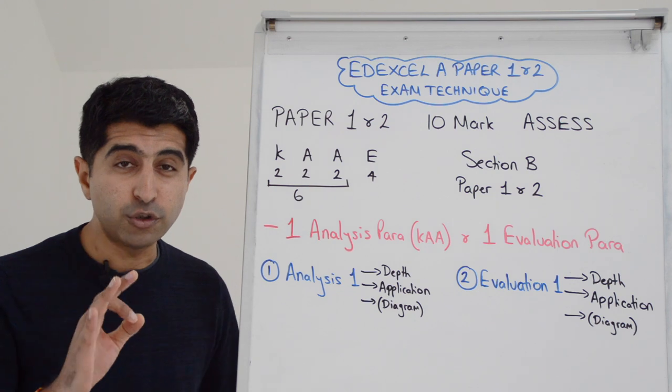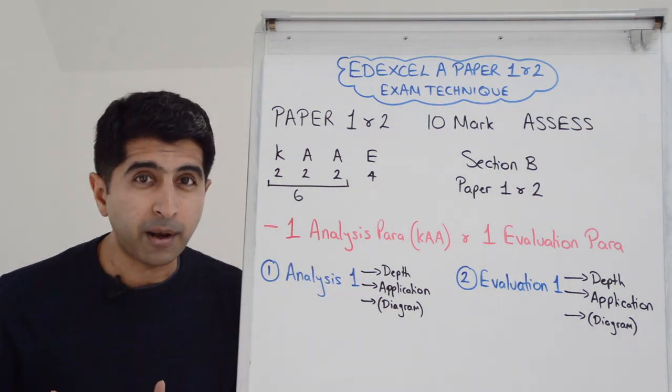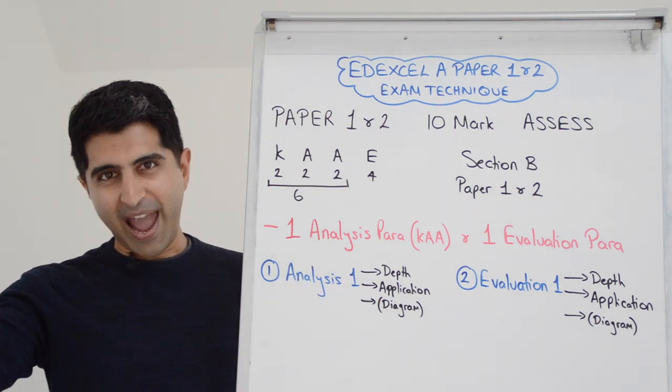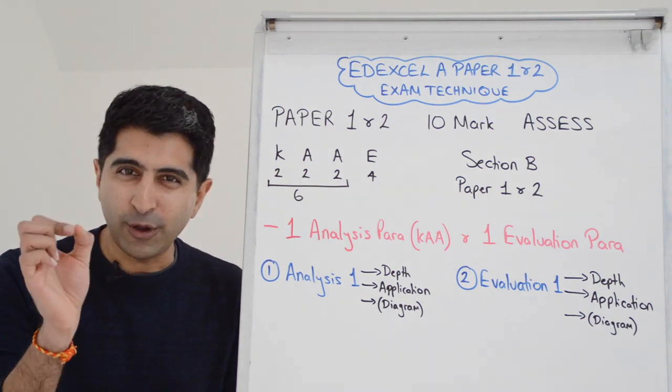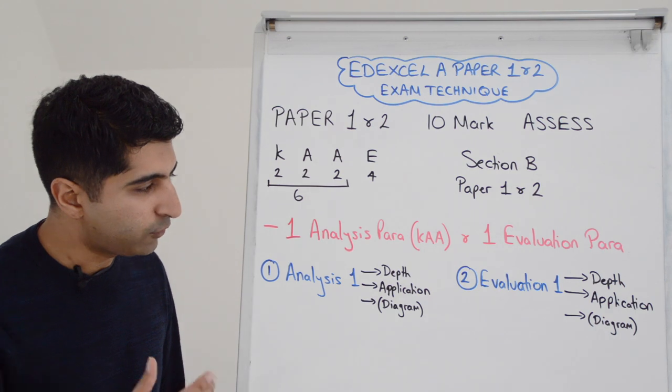You're looking for application crucial in section B. You're always applying. Where do you get that from? The extracts. All the examples, the application that you need will be in the extracts. So integrate that within your analysis, within your writing.